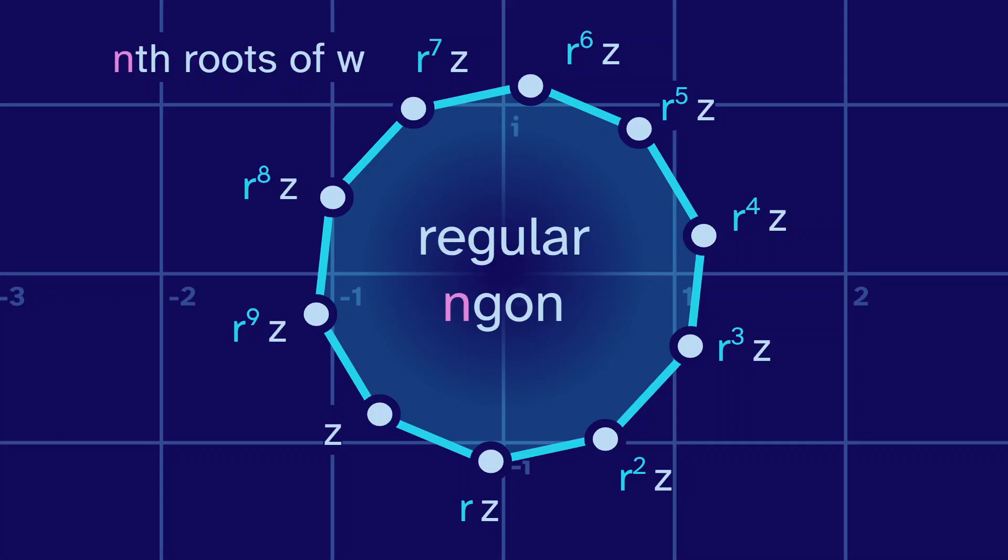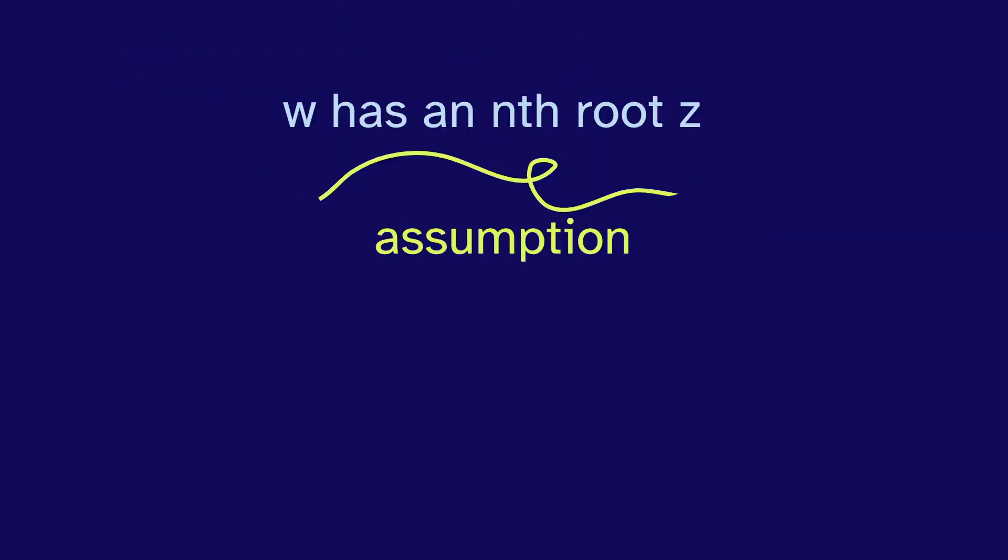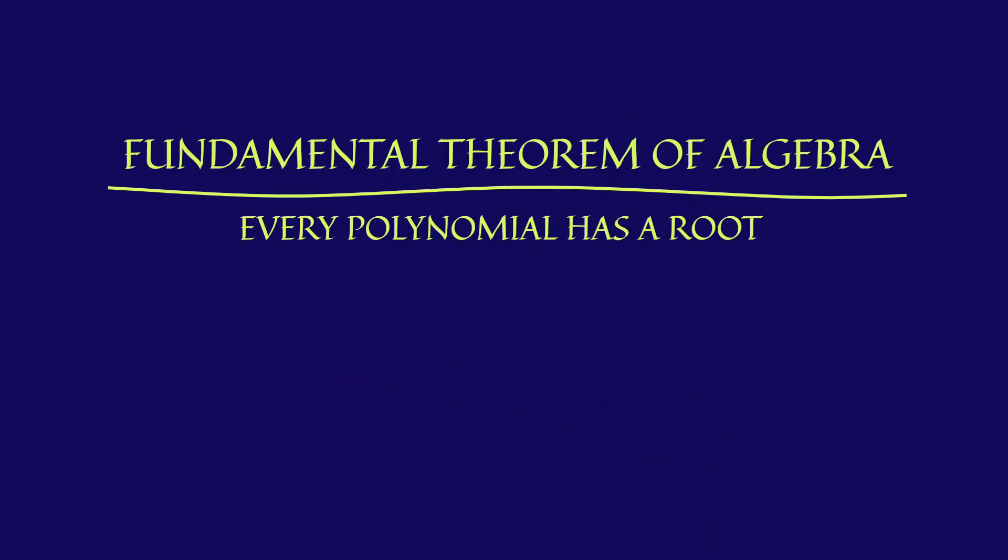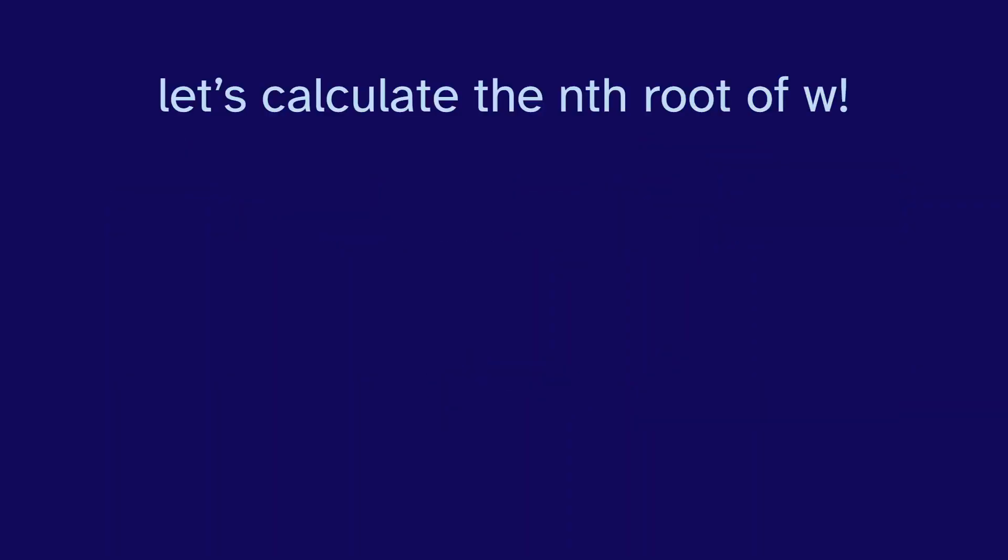So now we have a pretty good intuition about these nth roots on an n-gon. But this rests on the assumption that w has an nth root z to begin with. If there is an nth root, we can rotate it to get more. But how do we know that there is at least one root? Well, the fundamental theorem of algebra tells us that every polynomial has a root. And since this is a polynomial, it has a root. So yeah, there is a root. But this answer is not very satisfying unless you already understand the fundamental theorem of algebra. And I don't want to walk through that now. So instead of this theoretical argument, let's calculate the nth root of w.